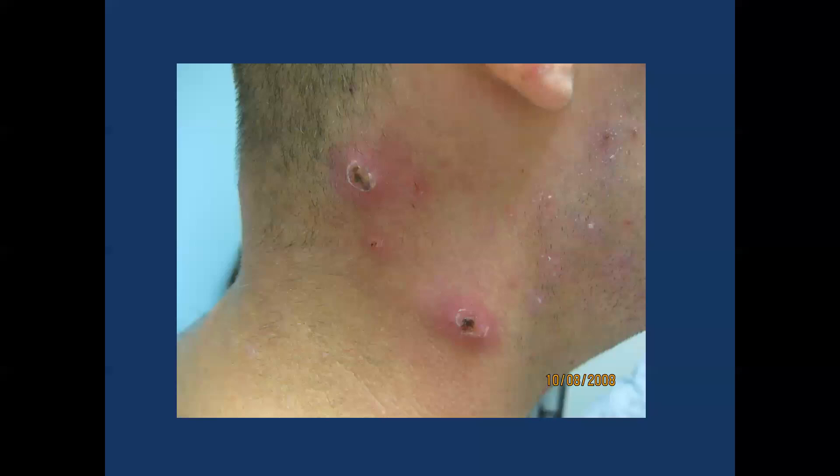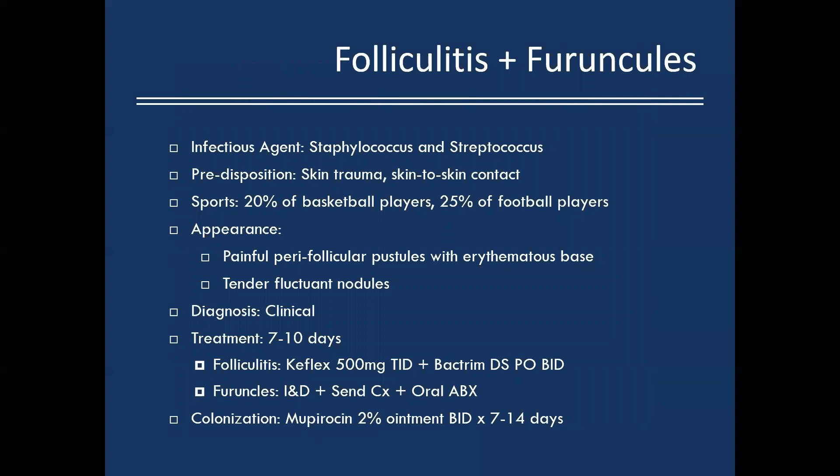Next: erythematous nodular lesions with a scab — folliculitis, and larger ones may have progressed to furuncles. The infectious agent is again staph and strep. Skin trauma predisposes individuals, as does skin-to-skin contact. We see this in about 20% of basketball players and 25% of football players — the friction from pads being a major factor. Appearance: painful, hairy follicular pustules with erythematous base; furuncles become tender, fluctuant nodules. Diagnosis is clinical.